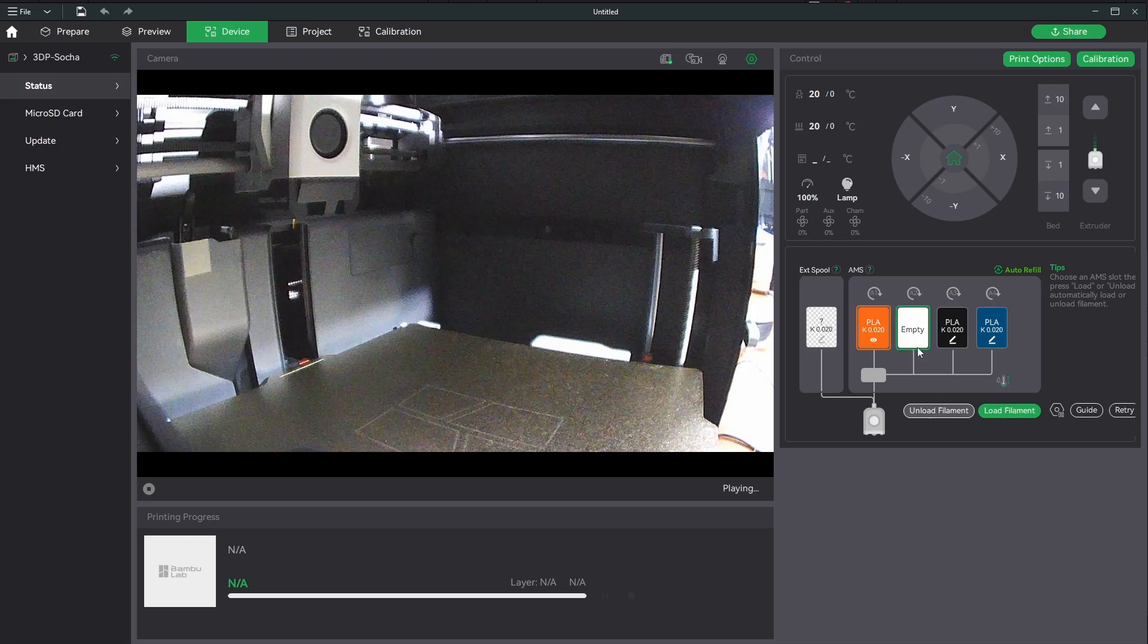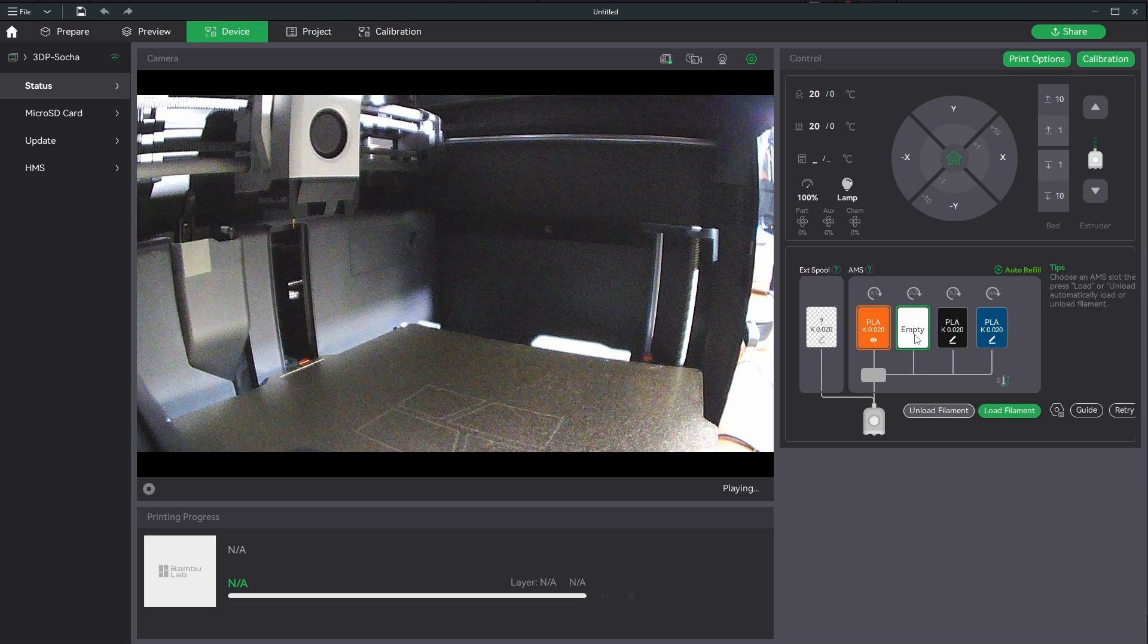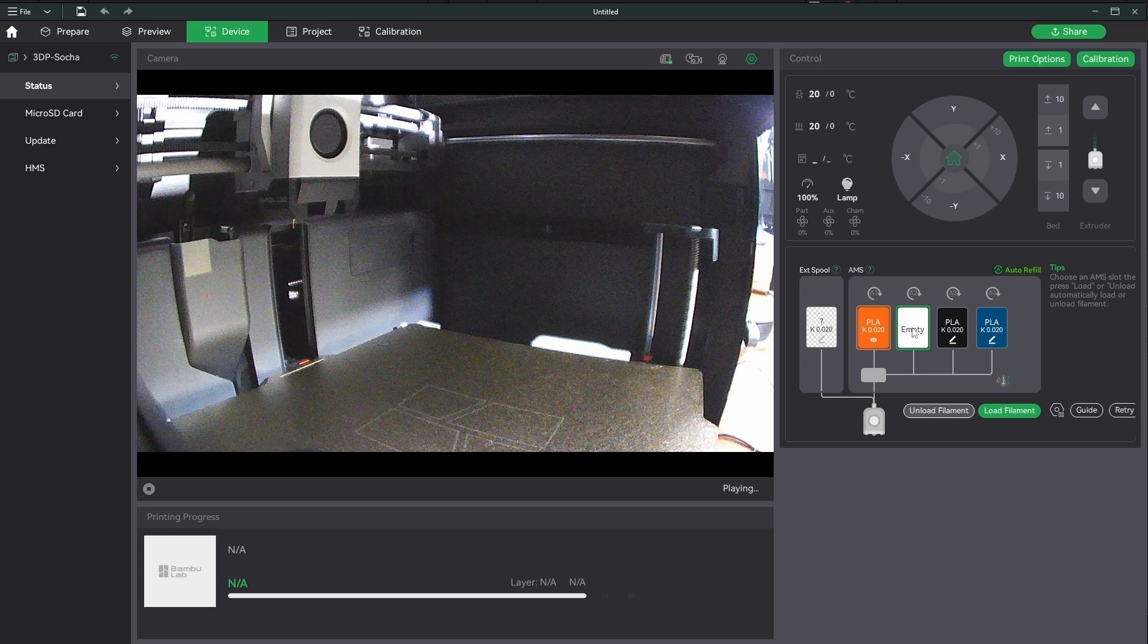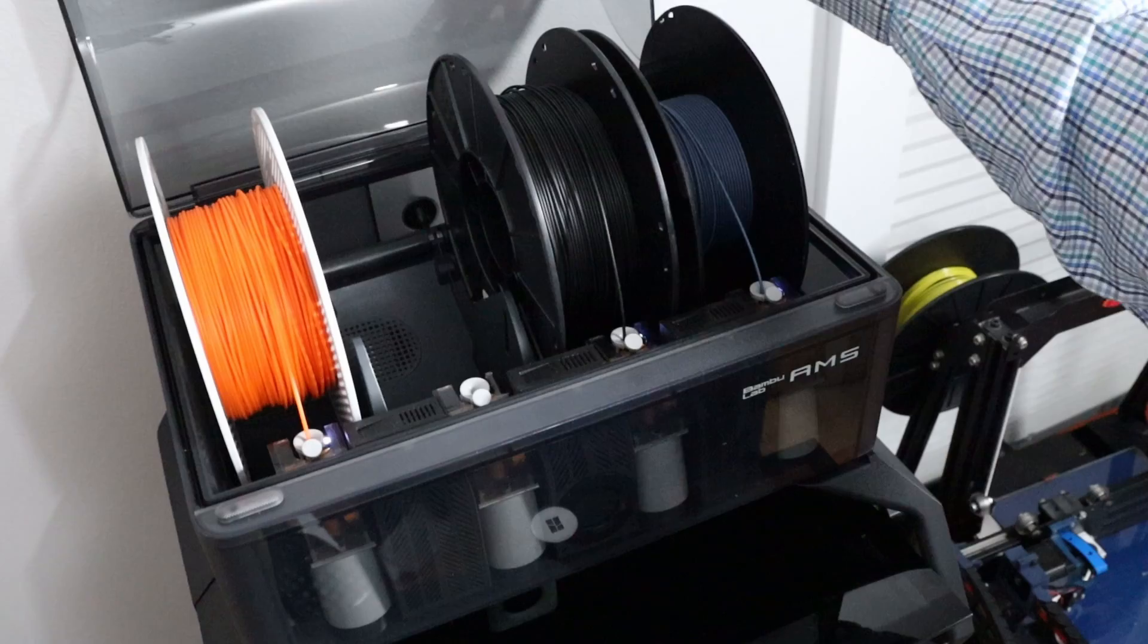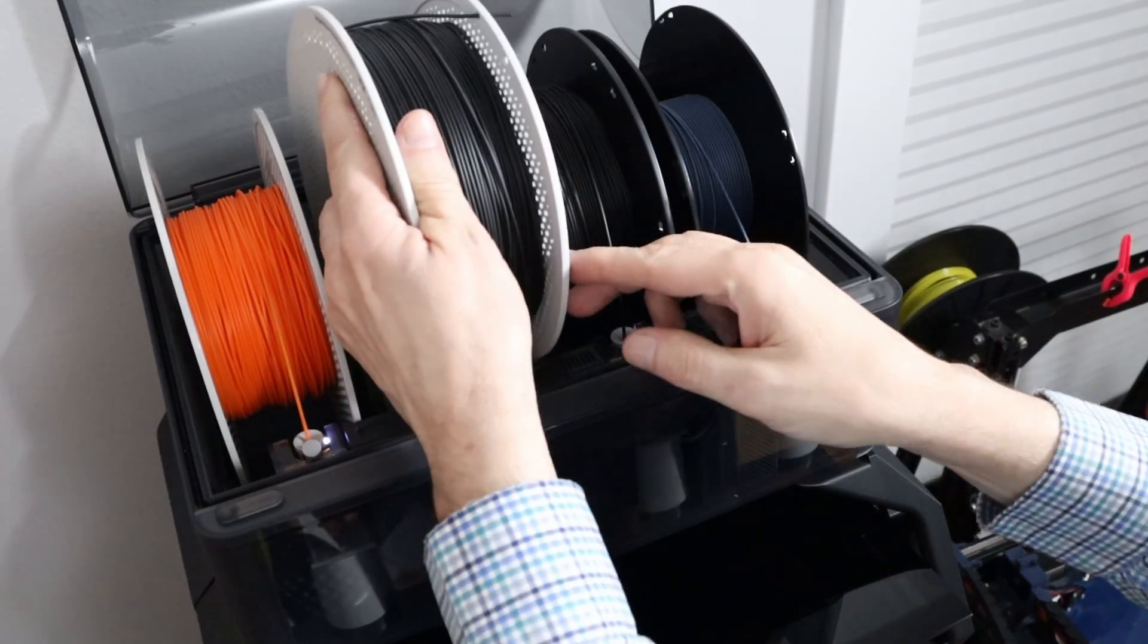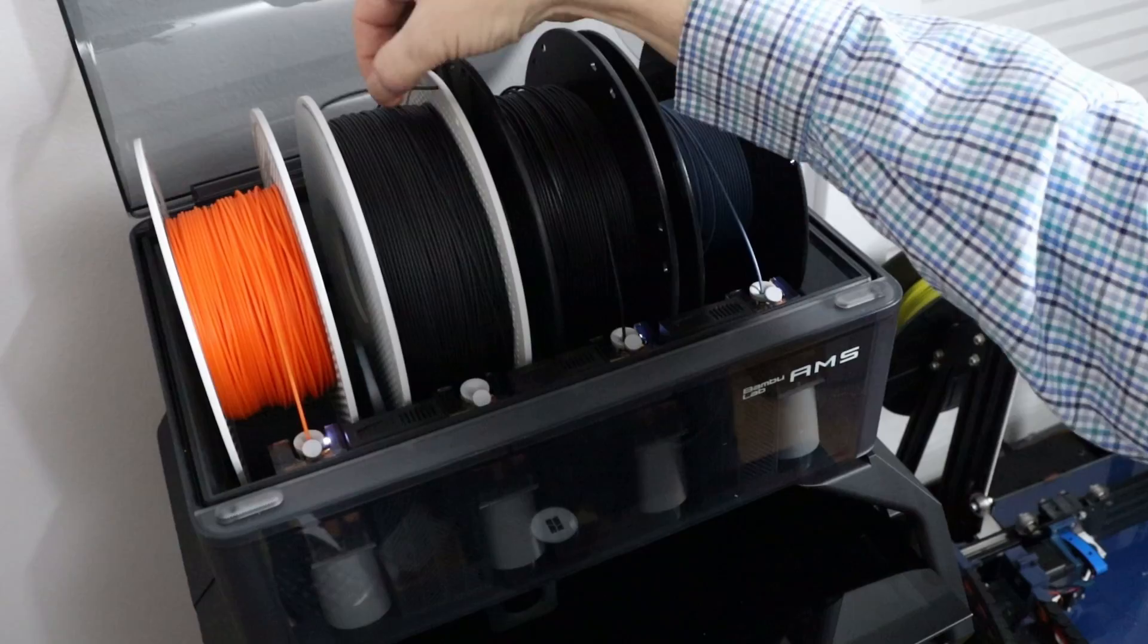At the moment I have the second slot empty, which is where I'm going to put the filament, or the refill that I just put into a spool. So I just need to open the lid, put in the new roll of filament.